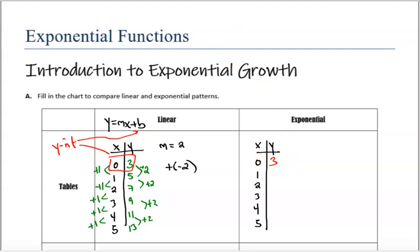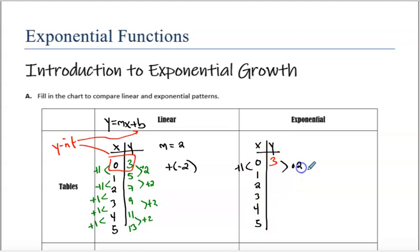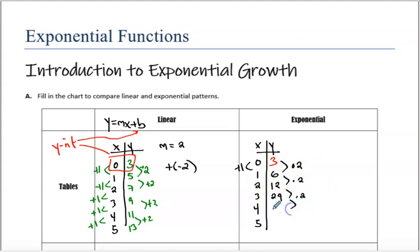But let's start here at (0, 3). And this time, rather than adding 2 each time, I'm going to multiply by 2 each time. So I add 1 to my x — as I increase my x values by 1, what is happening to my y value? I'm going to multiply by 2. So 3 times 2 is 6. Do it again — multiply 6 by 2, that's 12. Keep multiplying by 2: 24, then 48, then 96.